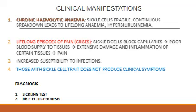There is hyperbilirubinemia. There are lifelong episodes of pain because the sickle cells block capillaries, and the blood supply to the tissues becomes affected. There is extensive damage and inflammation around the tissues, causing a lot of pain.